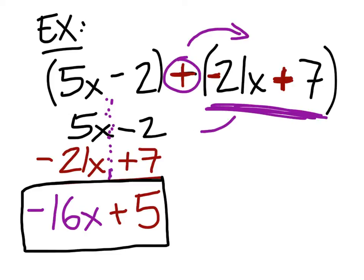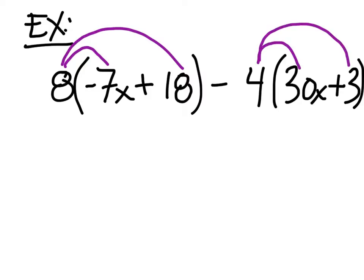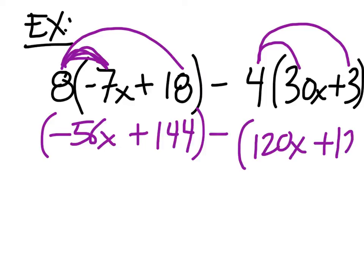Negative 2 plus 7 is 5, and it's positive, so we say negative 16x plus 5. You wouldn't say negative 16x positive 5 because that would be more confusing. If you see problems like this, you do need to distribute first. So we're going to take the 8 and distribute it — distribute it as though it were positive, and then we'll deal with the minus later. What's 8 times negative 7x? Negative 56x. 8 times 18? 144. Very good.